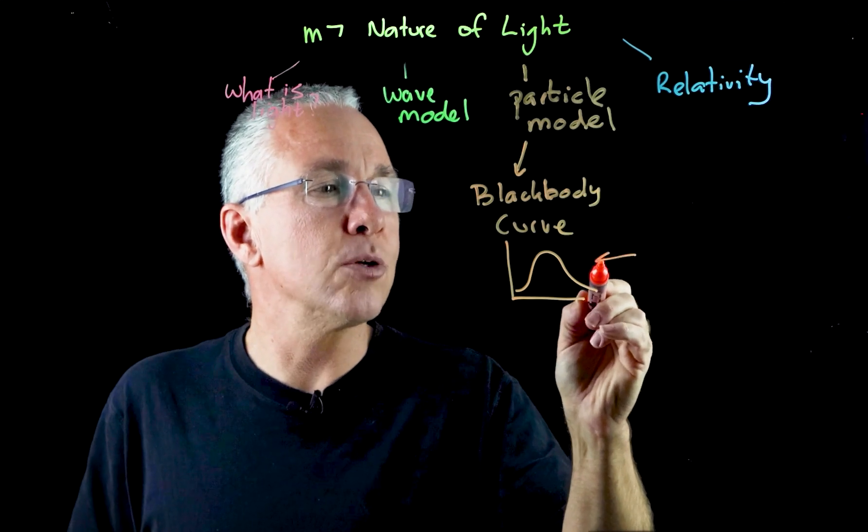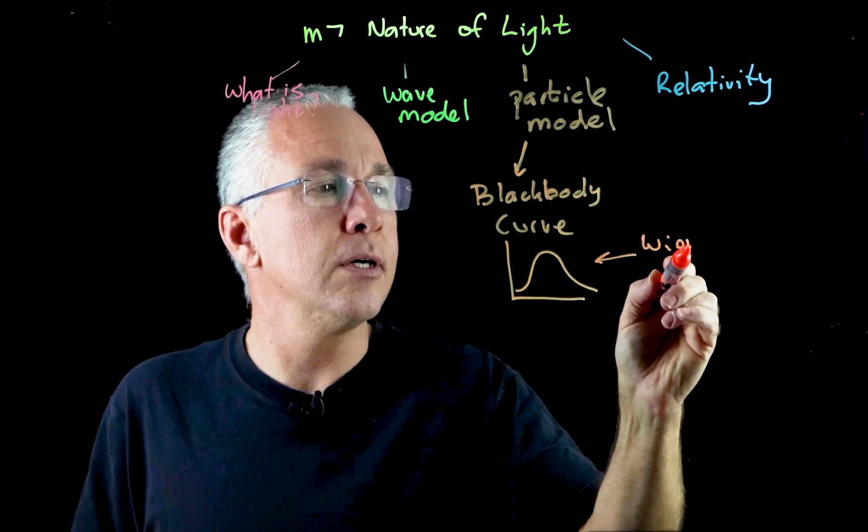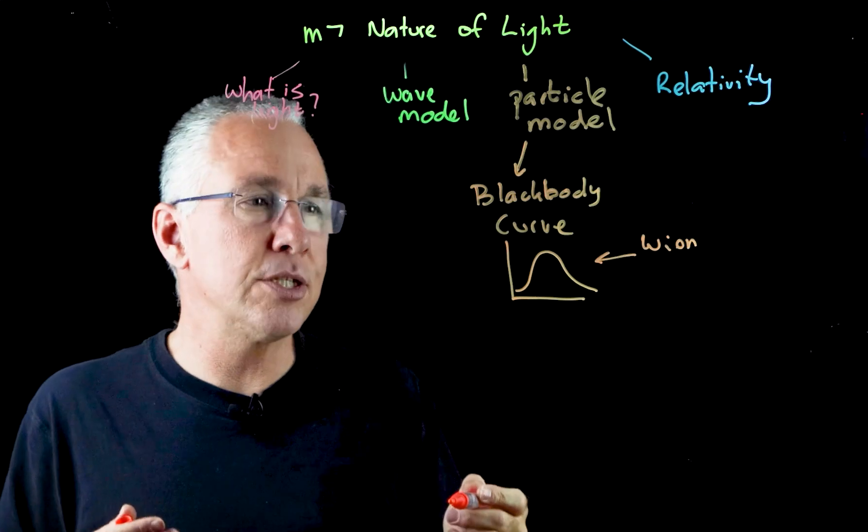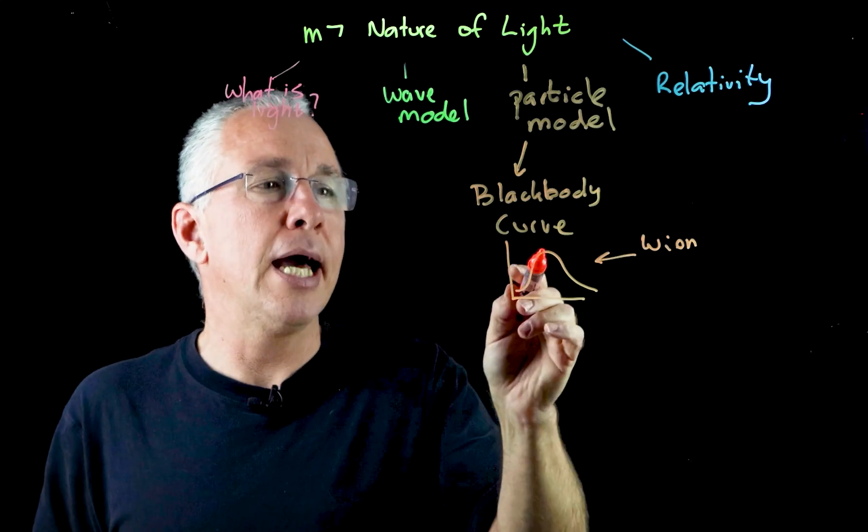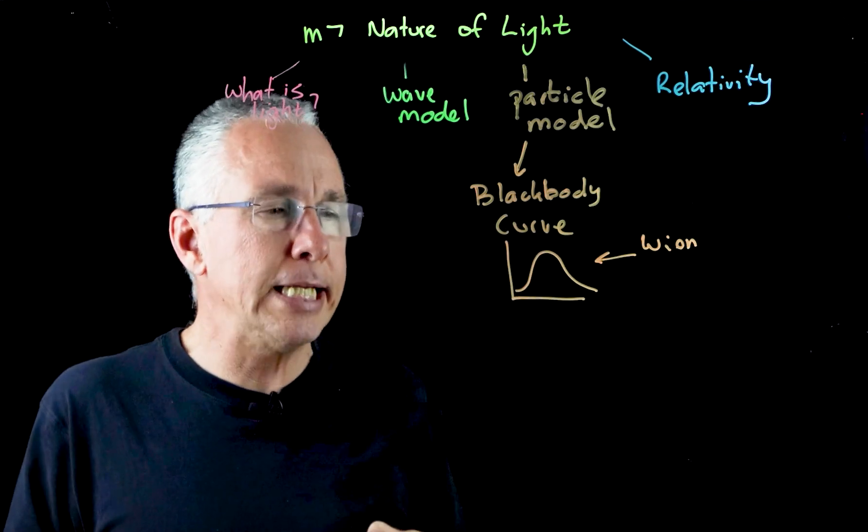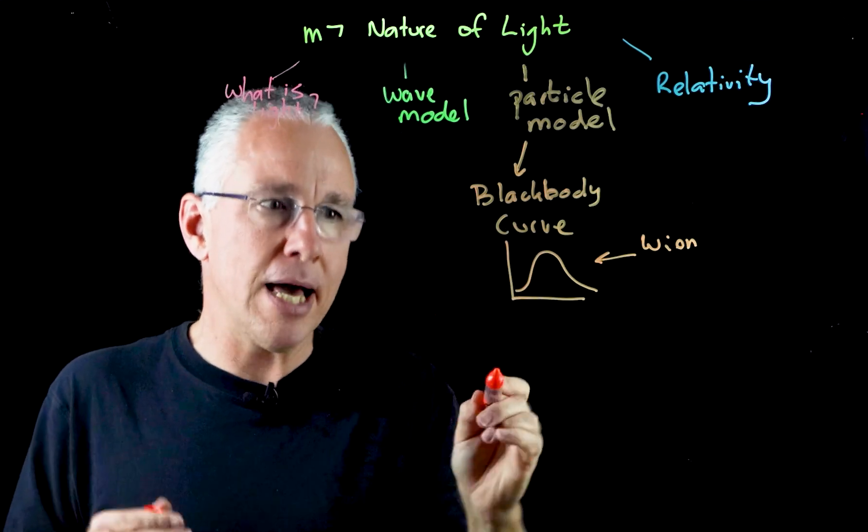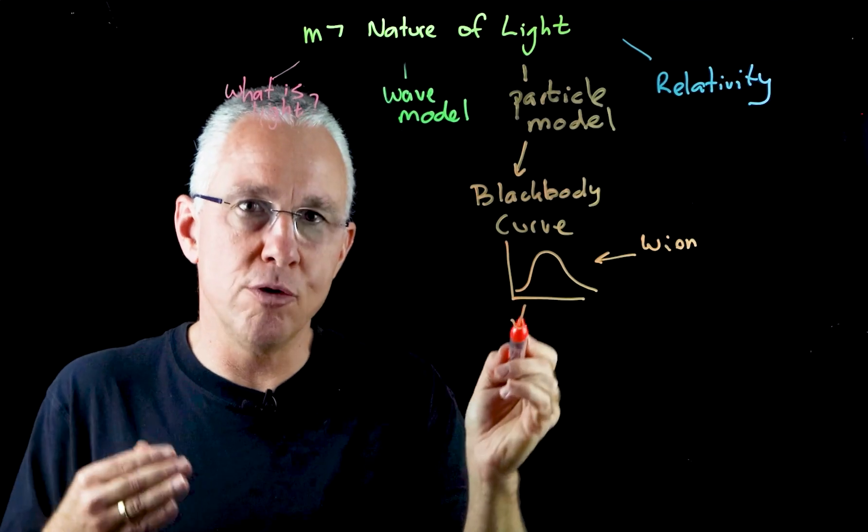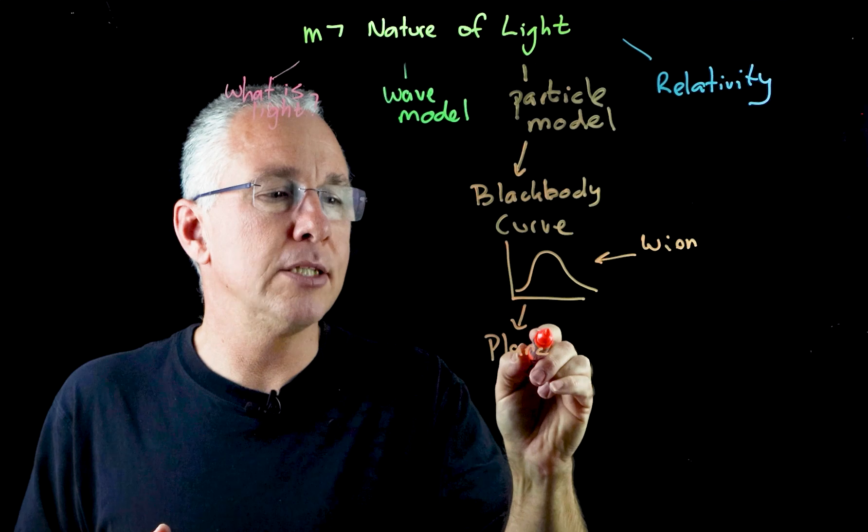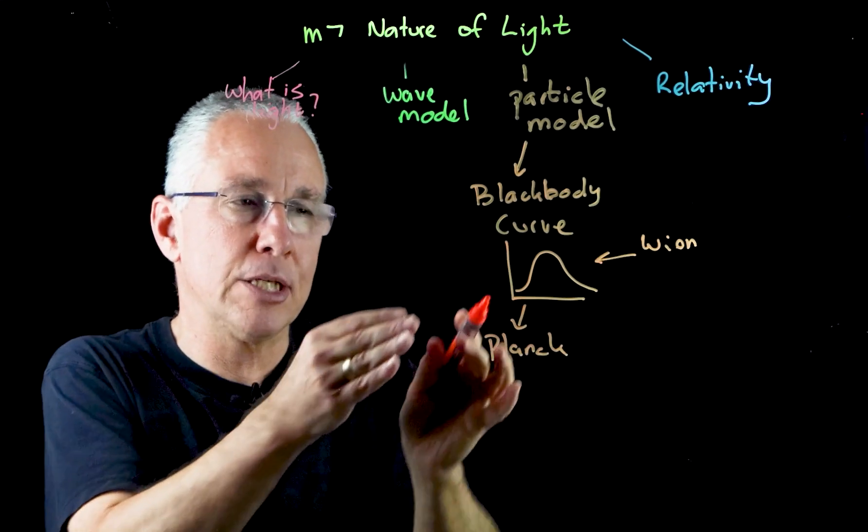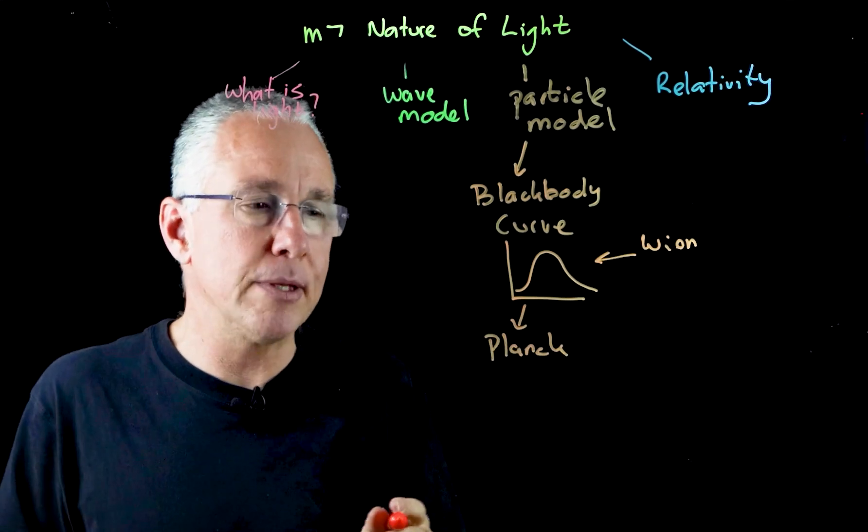Allied to this is also Wien's law, which establishes the mathematical relationship between the temperature of a black body and the wavelength with the peak spectral irradiance. This is where Planck comes in. Planck tried to find a mathematical model to establish why this curve has the shape it does.